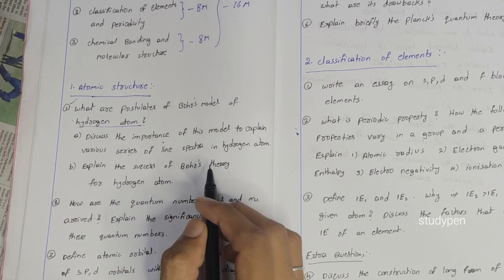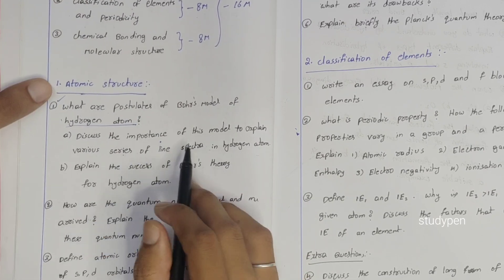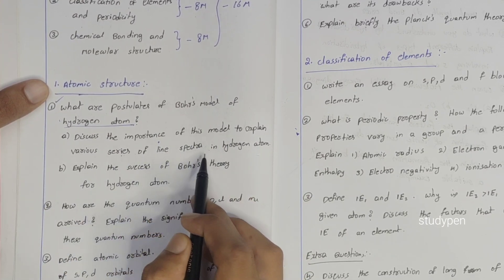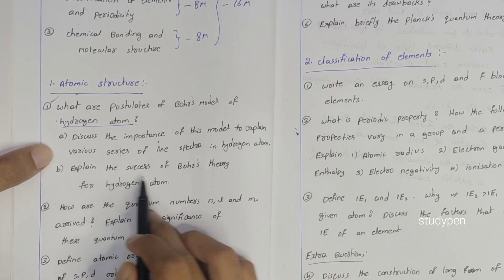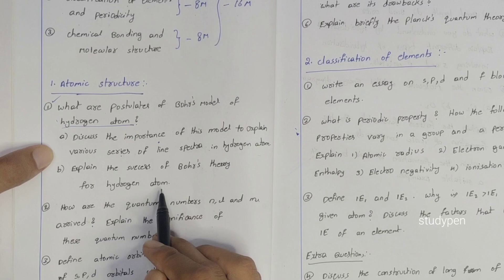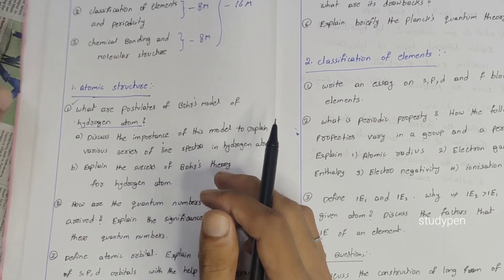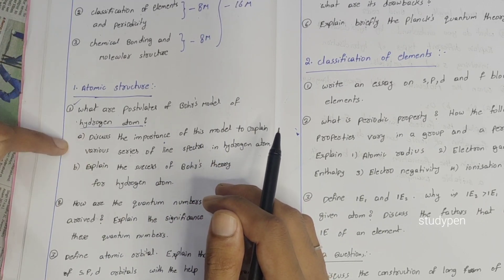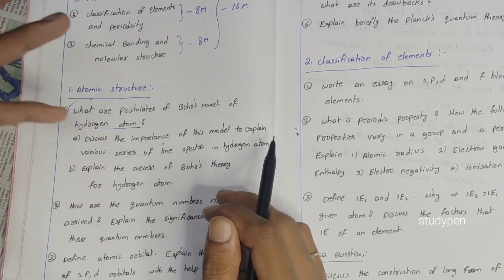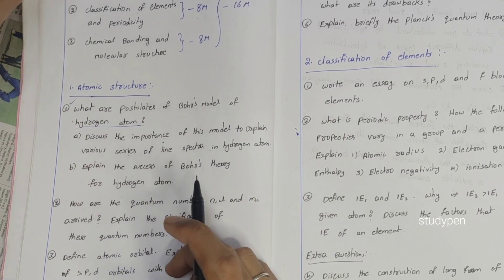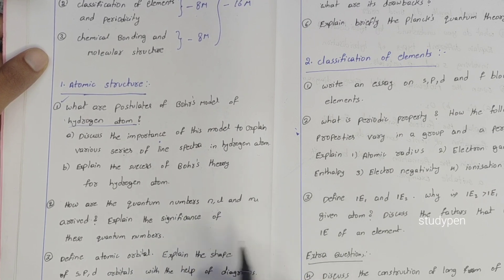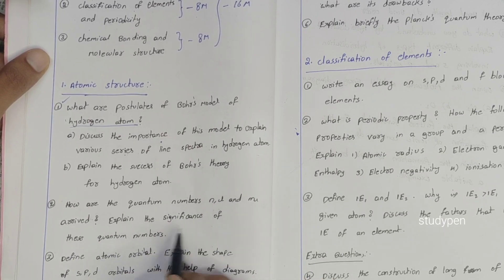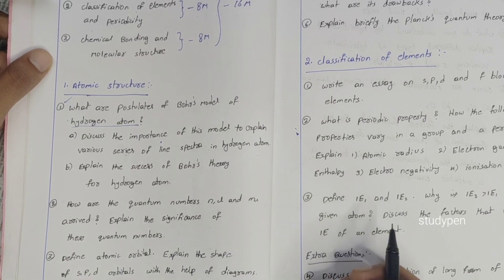Let's talk about it. First, discuss the importance of this model to explain various series of line spectra in hydrogen atom. Next, explain the success of Bohr's theory of hydrogen atom. These two questions are similar.